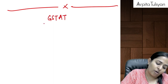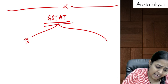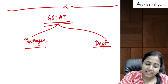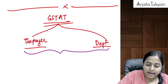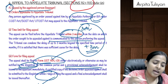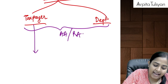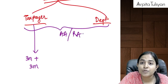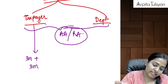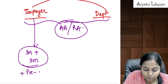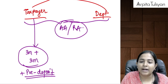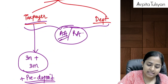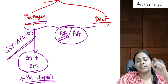Either the taxpayer or the department can file an appeal before GSTAT against the order of the appellate authority or the revisional authority. The taxpayer can file within three months, with a further condonation of three months, from the date of communication of the AA's or RA's order. The taxpayer must pay a mandatory pre-deposit. The appeal is filed in form GST APL-05. The same procedure applies as for AA: if the order is on the portal, the provisional acknowledgement date is the filing date; if not, the self-certified copy must be submitted within seven days.